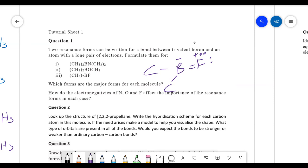The second question, how do the electronegativities of nitrogen, oxygen, and fluorine affect the importance of the resonance forms in each case? For nitrogen, the major will be the double bond with charge separation, whereas for fluorine, the major will be the single bonds where the boron doesn't have the full octet of electrons.